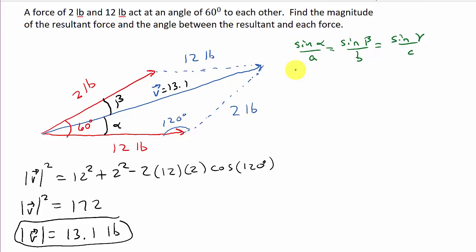So this would be what? The sine of alpha over the side opposite equals the sine of 120 over the side opposite. So I get sine alpha is equal to 2 times sine of 120 over 13.1. And I get, let's see, 2 times sine 120 divided by 13.1. So I get sine alpha is equal to 0.132217619.